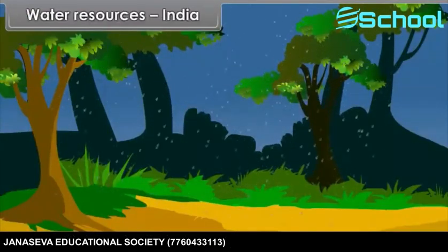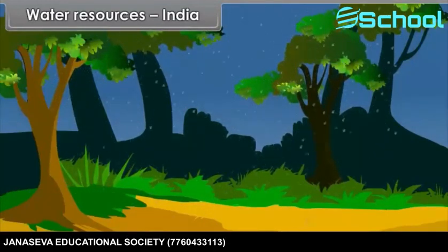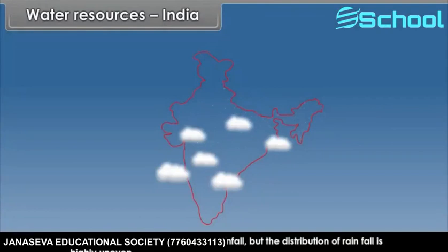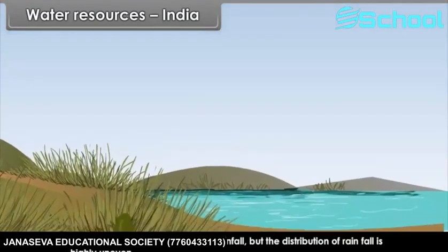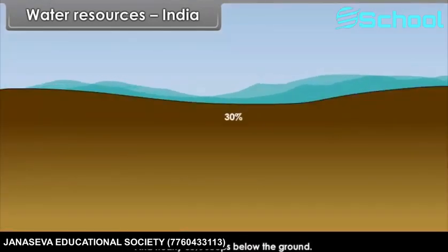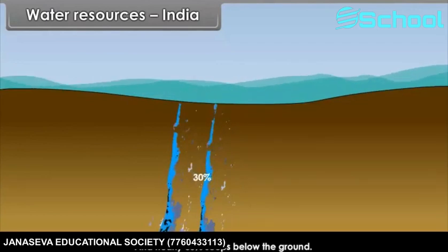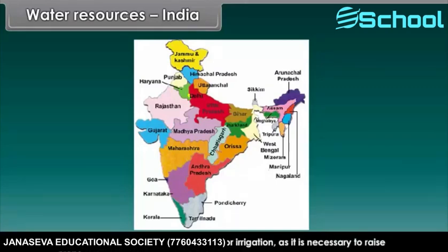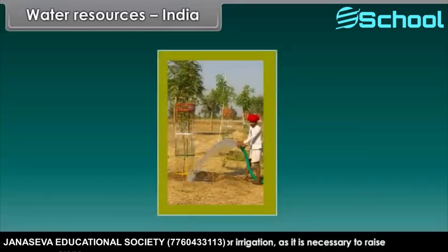Water Resources in India. India receives a good amount of rainfall, but the distribution of rainfall is highly uneven. About 20% of rainwater is lost by evaporation and nearly 30% seeps below the ground. Many parts of India face acute shortage of water even for domestic use. In India, a large volume of water is used for irrigation, as it is necessary to raise crops.